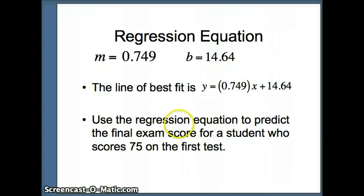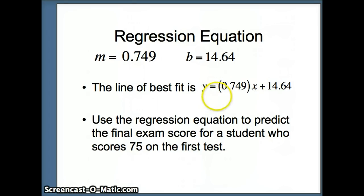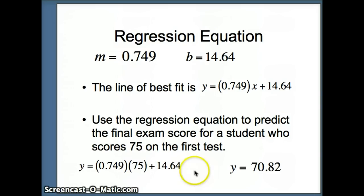We want to use the regression equation to predict the final exam score for a student who scores 75 on the first test. We take 75 and plug it in for x — x is our independent variable, y is our dependent variable. So y equals .749 times 75 plus 14.64. Plugging 75 in for x, we get .749 times 75 plus 14.64, and our predicted value for y is 70.82.